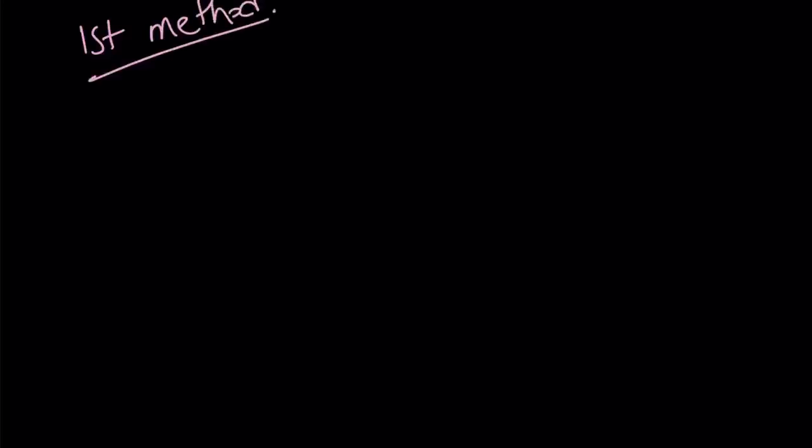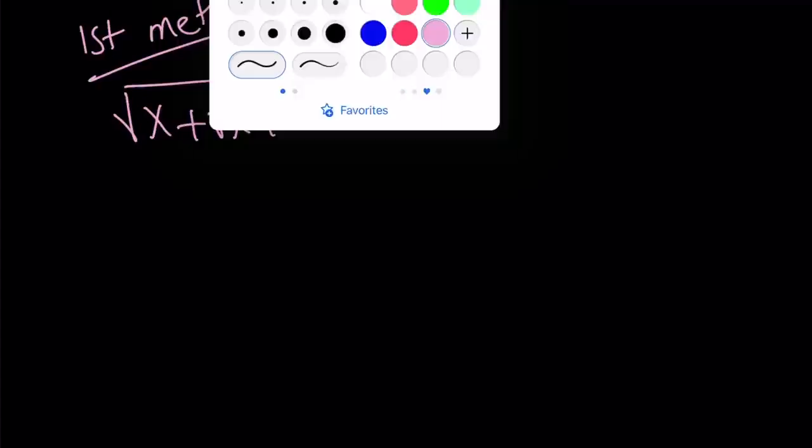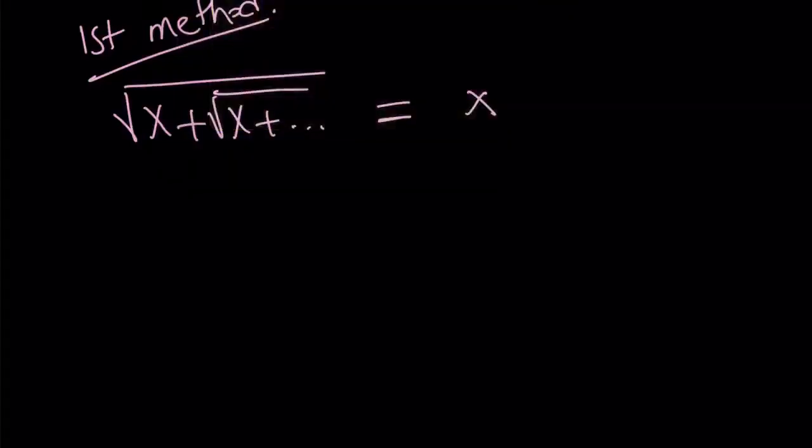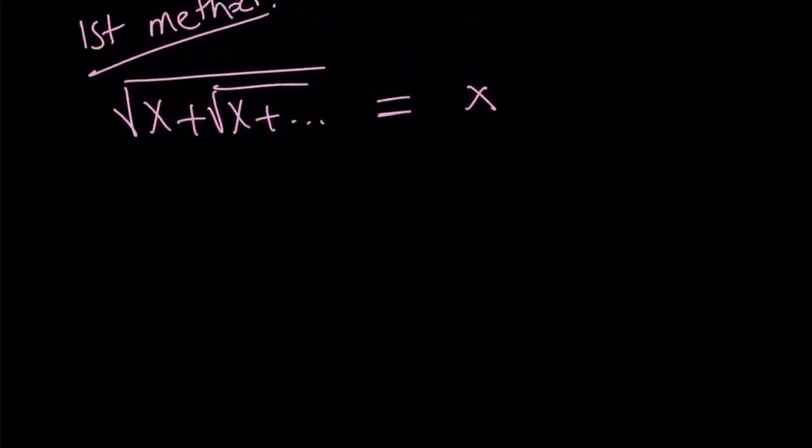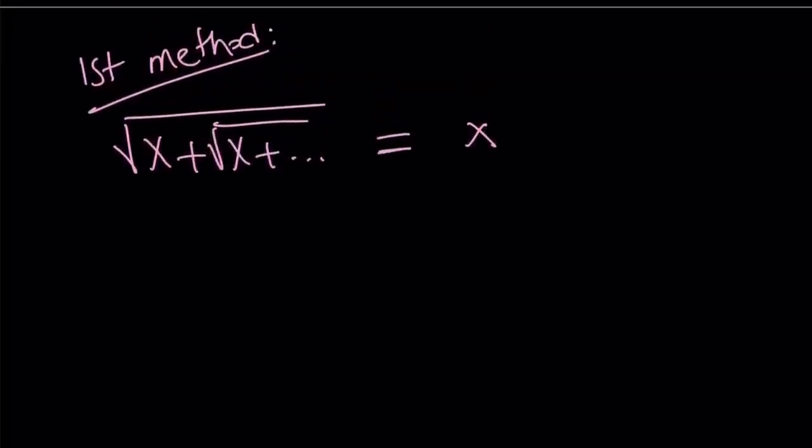All right. So our equation, again, is square root of x plus square root of x dot dot dot equals x. Okay. Now, when you have a number on the right-hand side, obviously, things are a little easier. But even with this, it's still easy. But first method is just going to be a little bit more painful. Bear with me.